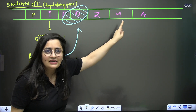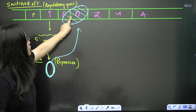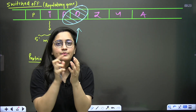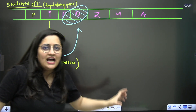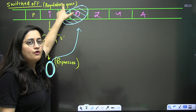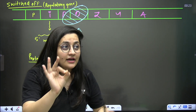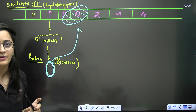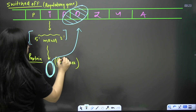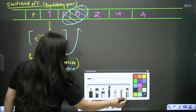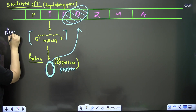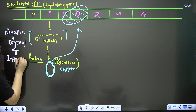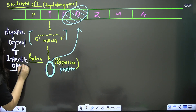When the repressor is attached to the operator, RNA polymerase cannot bind to the promoter. Since the promoter and operator are overlapping, when the repressor occupies the operator there is no space for RNA polymerase to bind the promoter. This is why we call it the negative control of the inducible operon — the regulatory gene forms a repressor that blocks transcription.